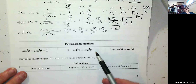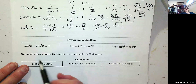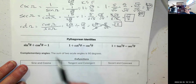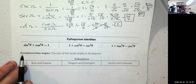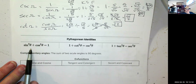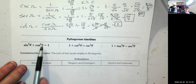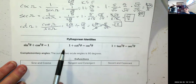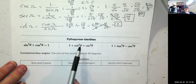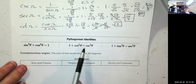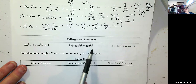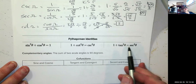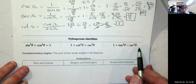Pythagorean identities: a² + b² = c². The identities are: sine²θ + cos²θ = 1; one plus cotangent²θ equals cosecant²θ; and one plus tangent²θ equals secant²θ.